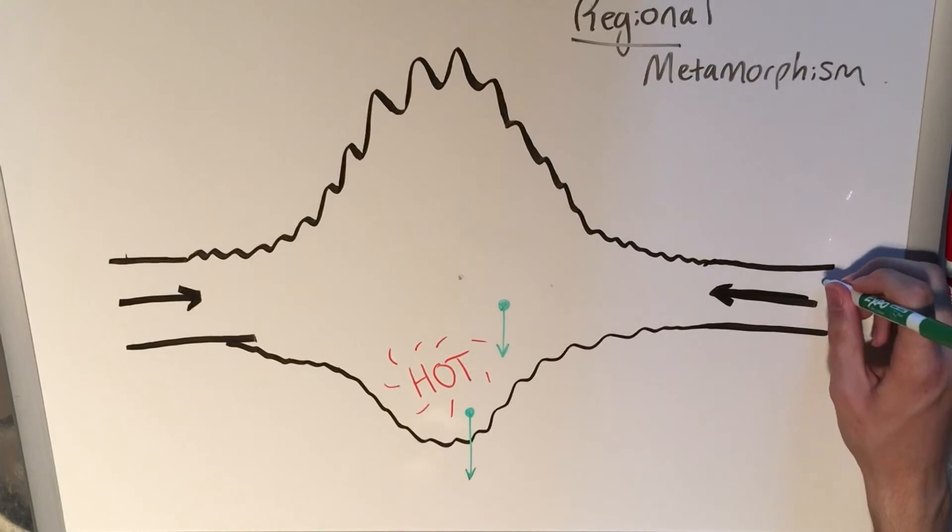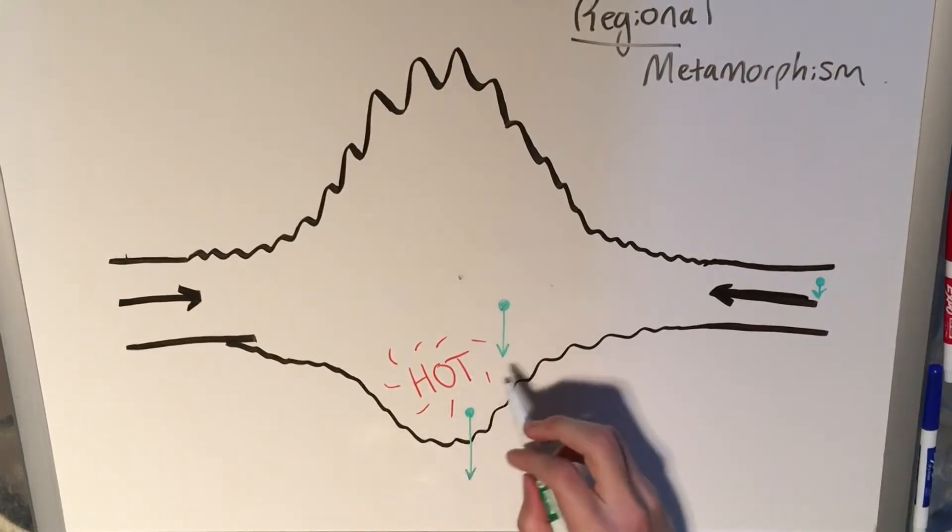Versus over here, there's very little on top of it. The confining pressure is going to be very small. So over here, it's hot, and we have the greatest amount of pressure.